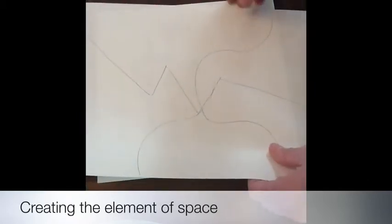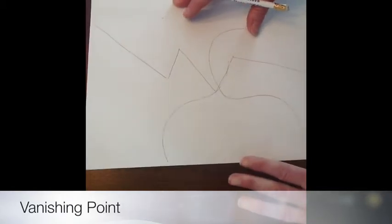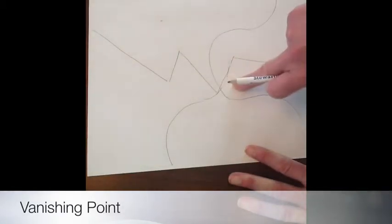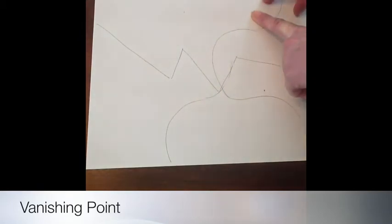The way you do that is you need to have a vanishing point, a point where everything is receding to, and it can be anywhere on your piece of paper. If it's over here your shapes are going to recede this direction, if it's over here they're going to recede this direction.